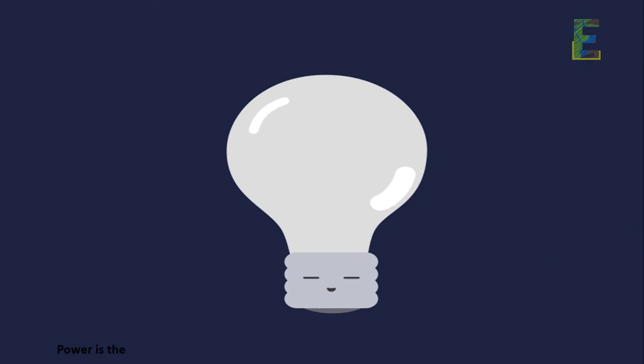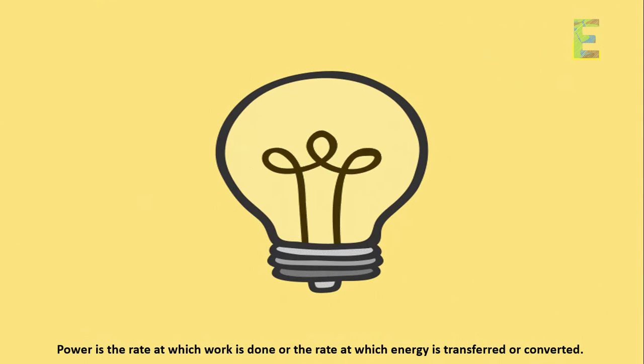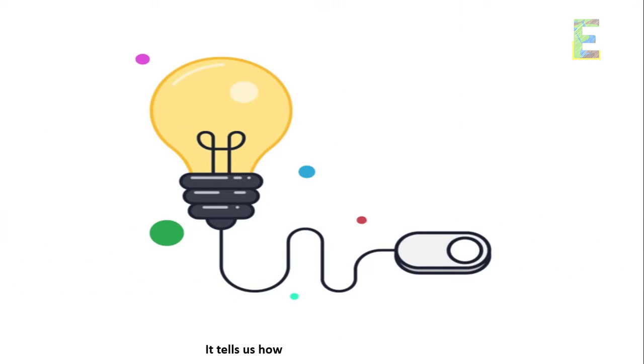What is power? Power is the rate at which work is done or the rate at which energy is transferred or converted. It tells us how quickly work is performed.